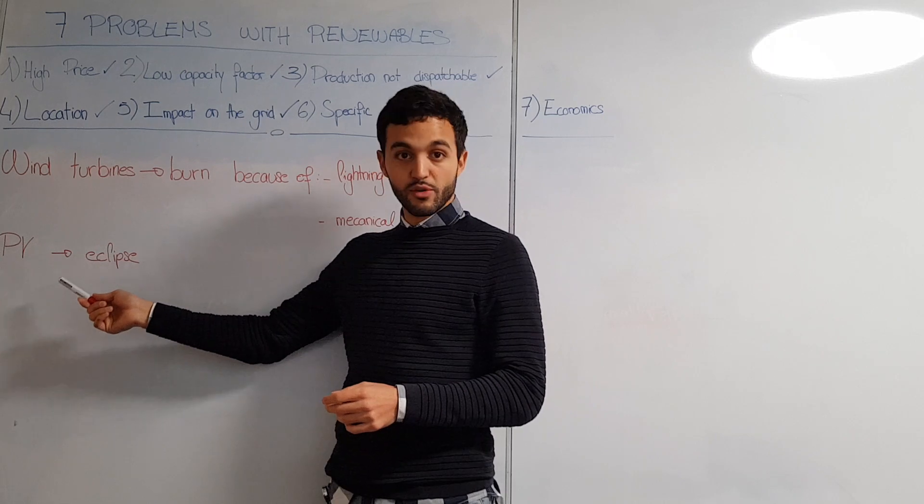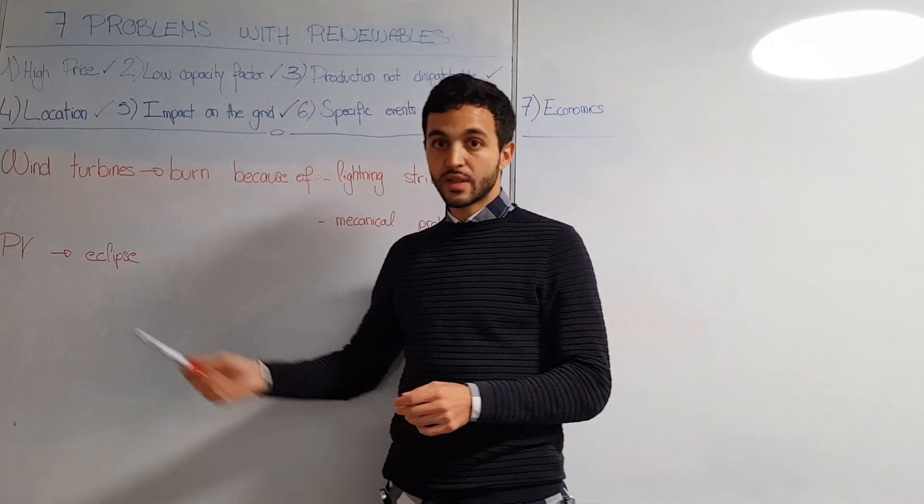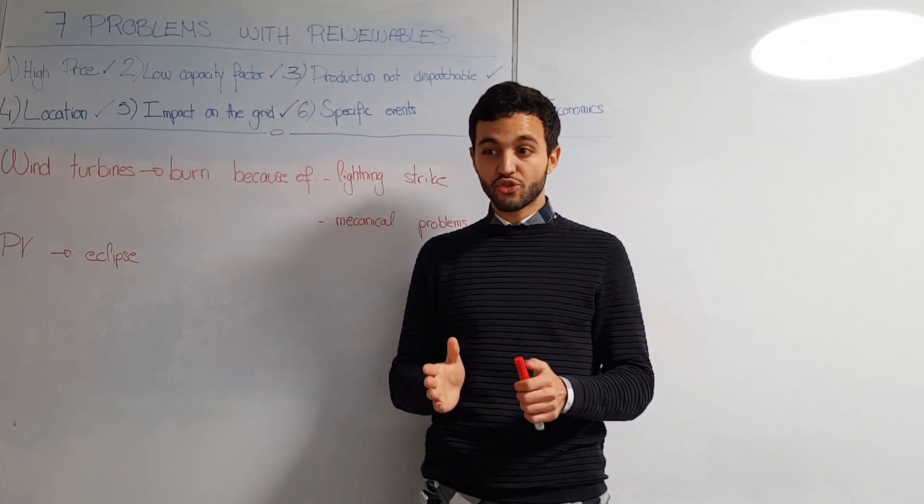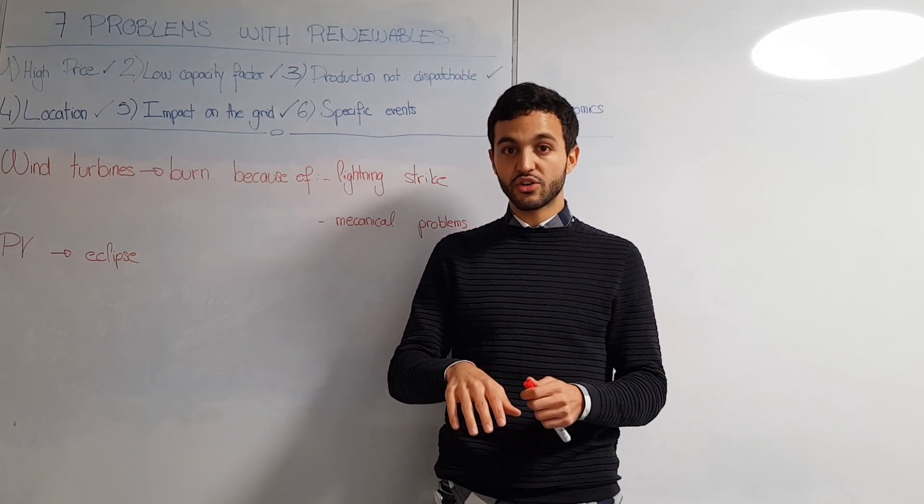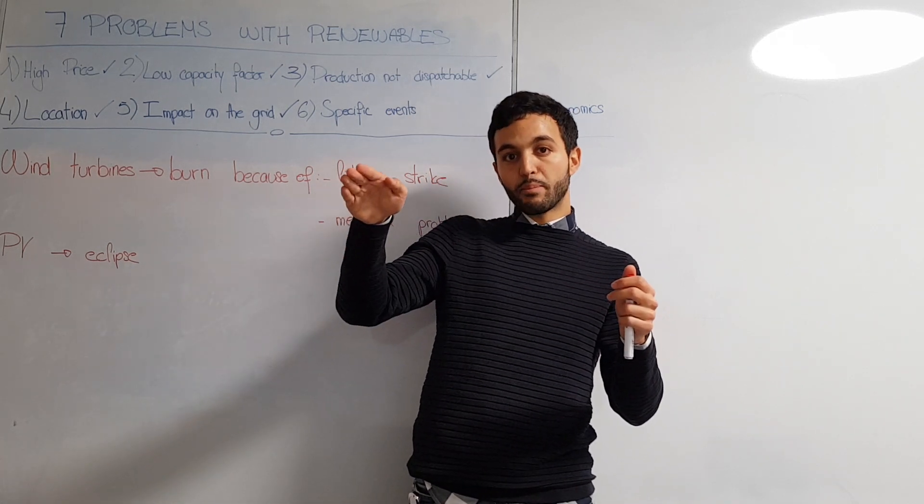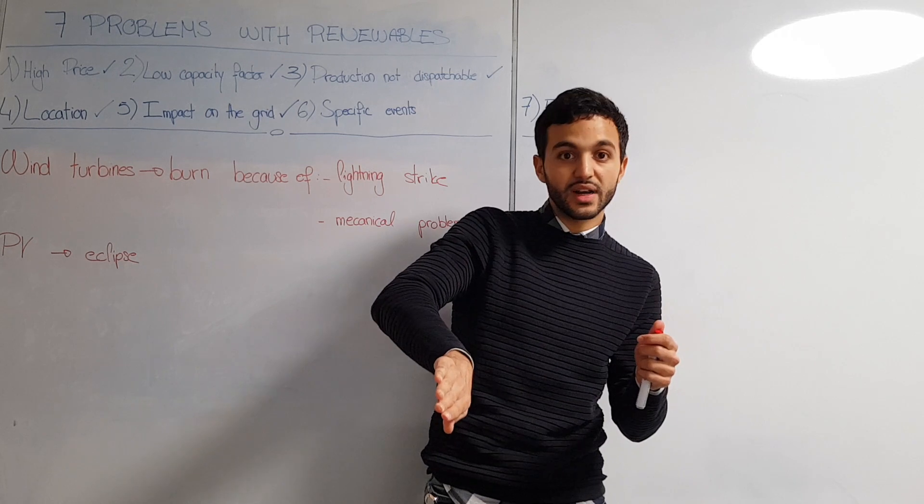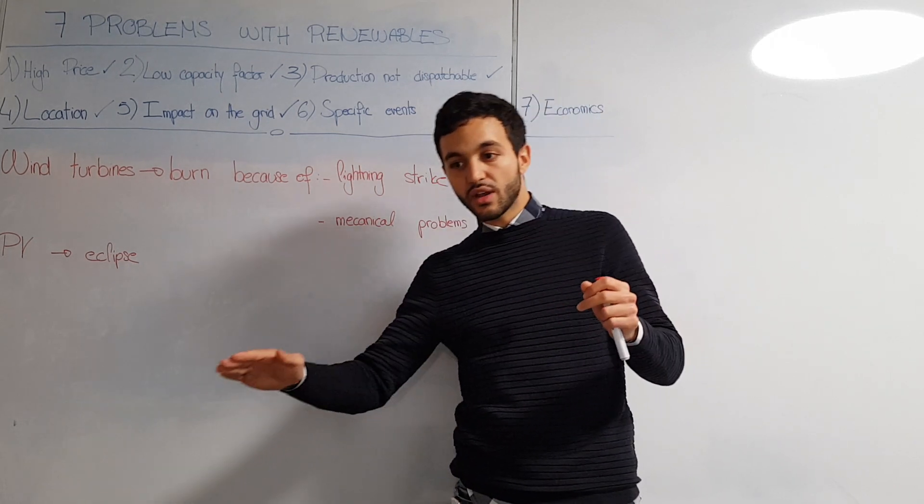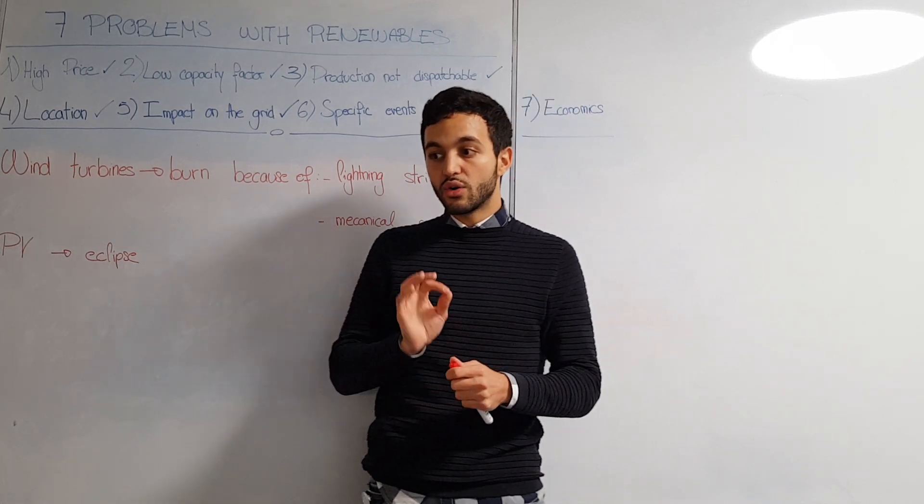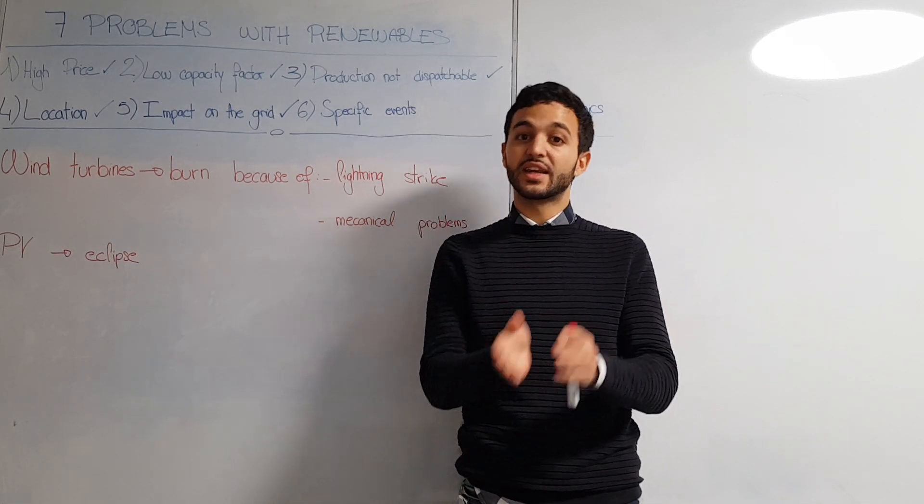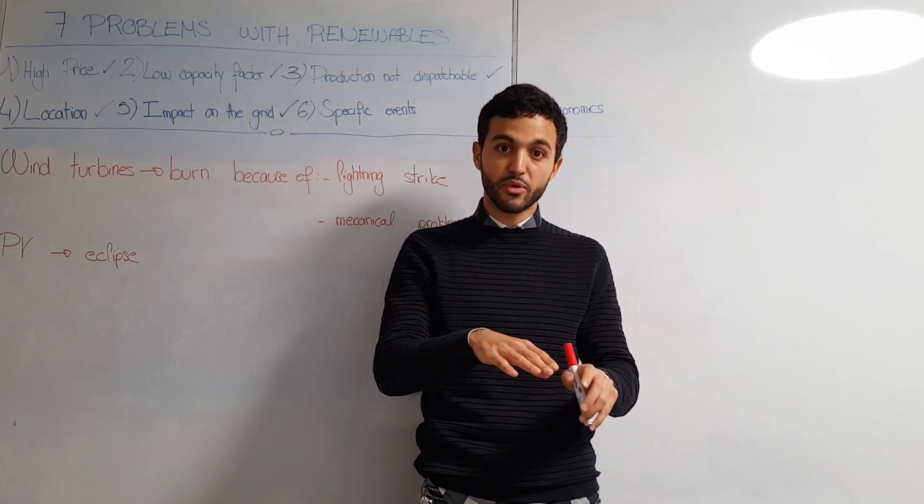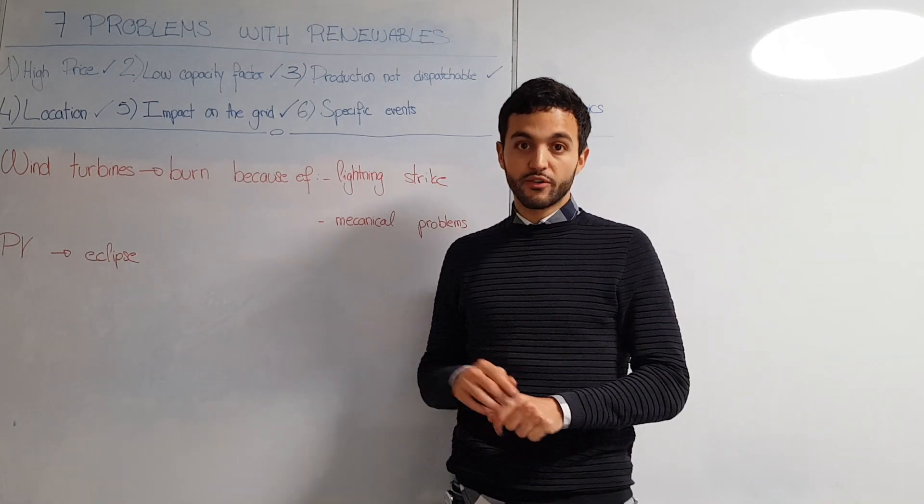With PV the problem which can happen is an eclipse. In March 2015 it happened in Germany. Germany is the country with the most PV installation in Europe. The problem with an eclipse is you have your basic production from PV, then it suddenly goes down and suddenly comes back. It's not an incremental increase like in sunrise. That's a problem, but if you have very clear forecasts and calculations on your production and how you can compensate with other means of production, you can overcome it. But it requires a lot of work.